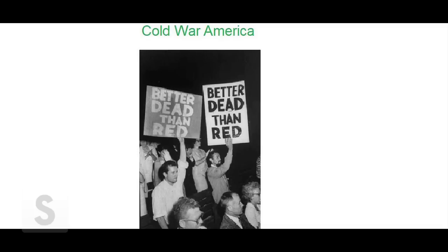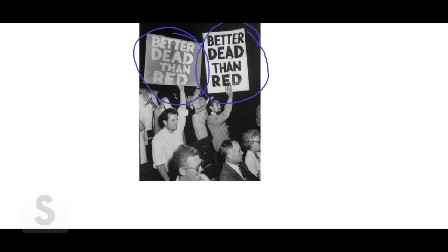In our last lecture, we talked about the origins of the Cold War and the early policies of containment that people like George Kennan proposed to defend the United States by containing the spread of communism internationally. This policy of containment becomes really the official U.S. doctrine employed to combat the strength and spread of the Soviet Union. Containment has its American components as well. Americans become very concerned about the spread of domestic communism, and people really did believe that the United States was under threat. It was better to be dead than red — better to fight against the Soviet Union than to be under Soviet or communist influence.